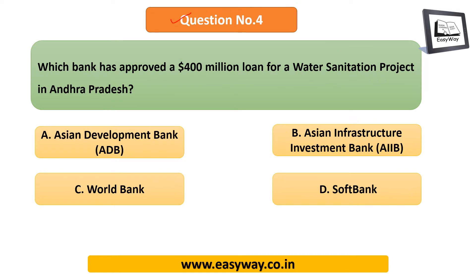Question 4: Which bank has approved a 400 million dollar loan for a water sanitation project in Andhra Pradesh? The answer is Asian Infrastructure Investment Bank (AIIB). As homework, tell us the headquarters of ADB, AIIB, and the World Bank — this forms part of Static GK that you should know.